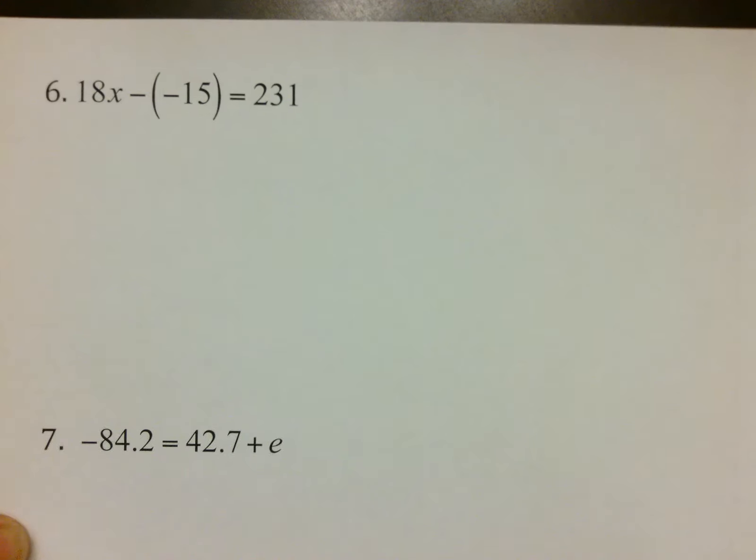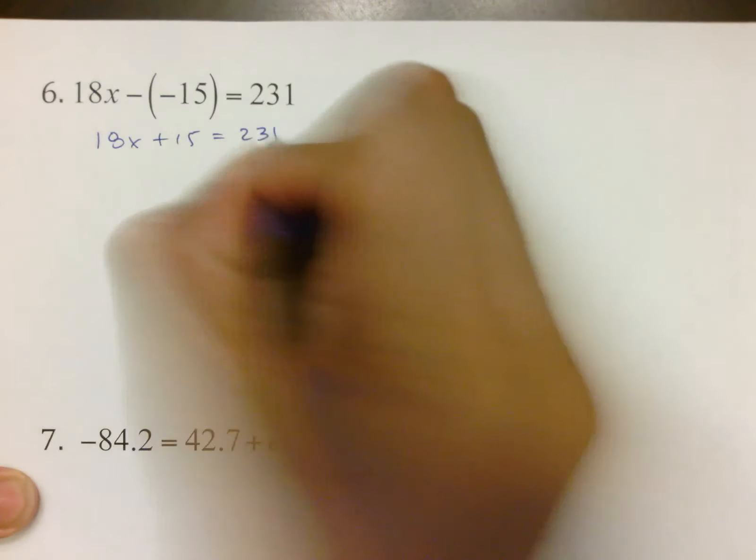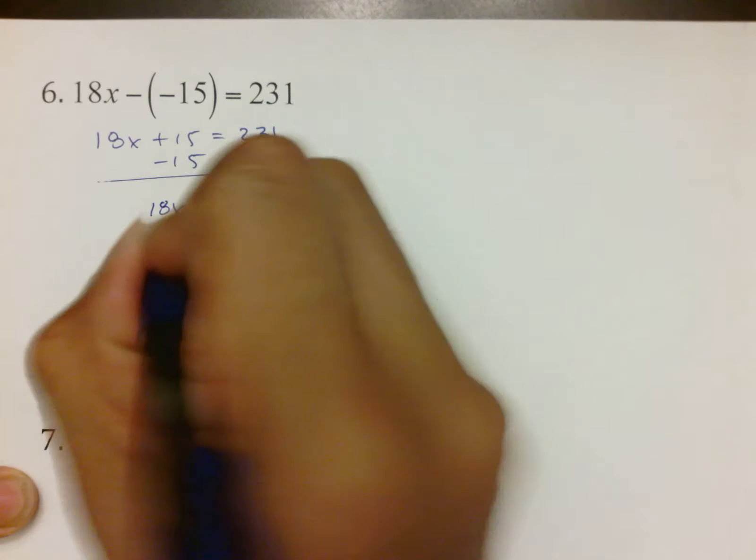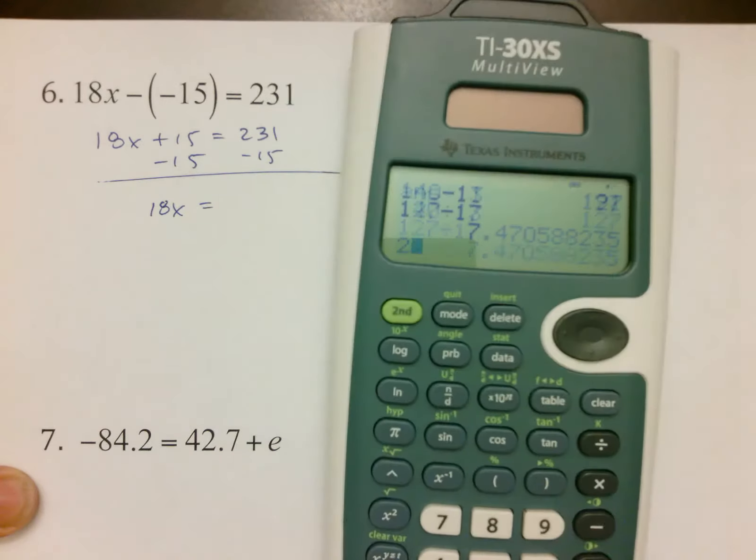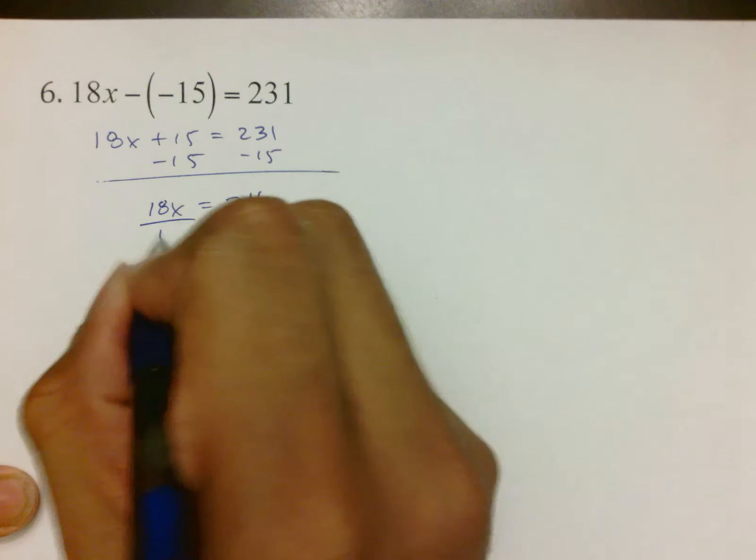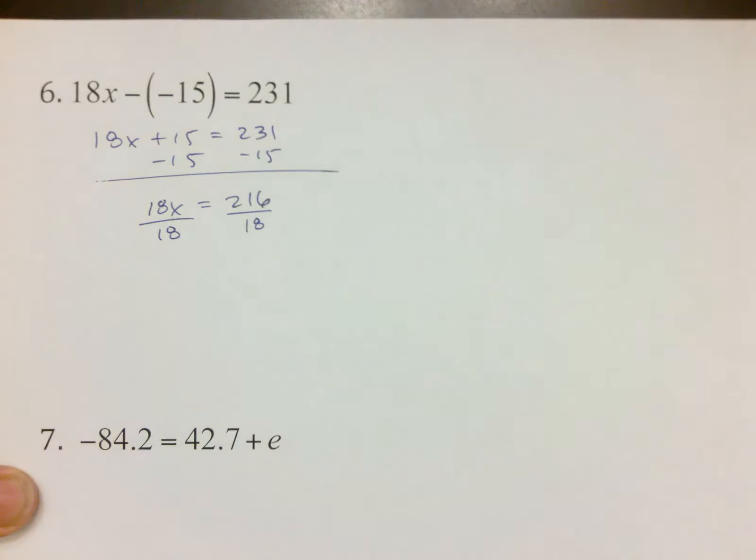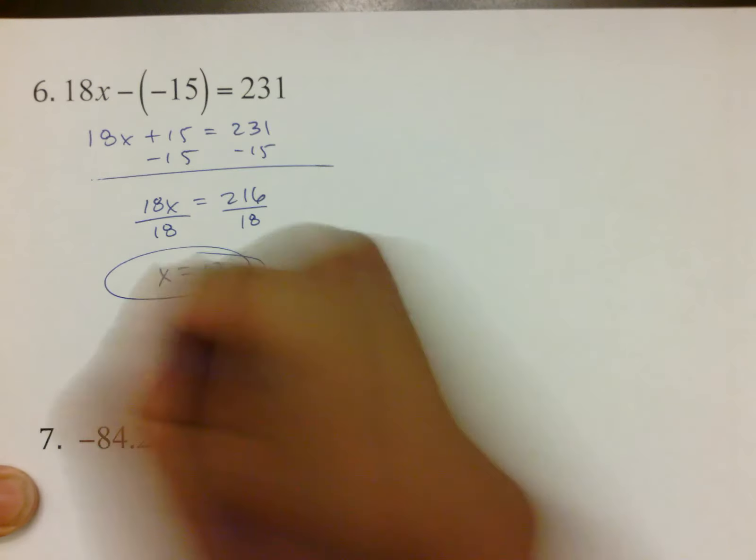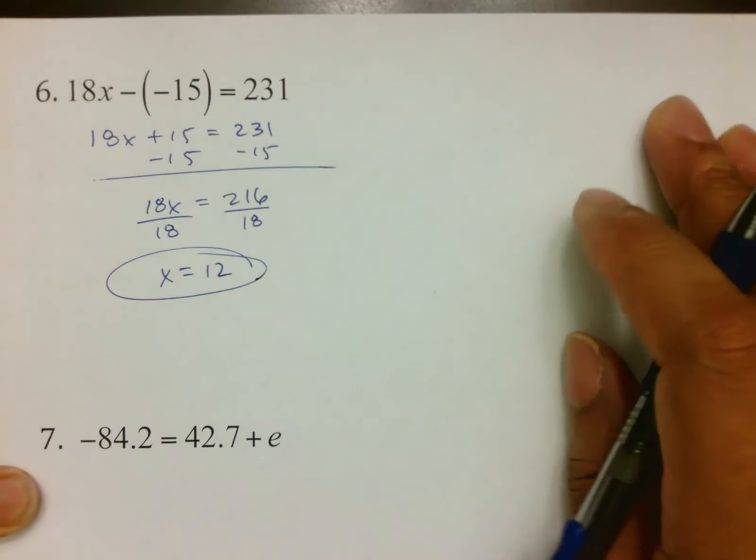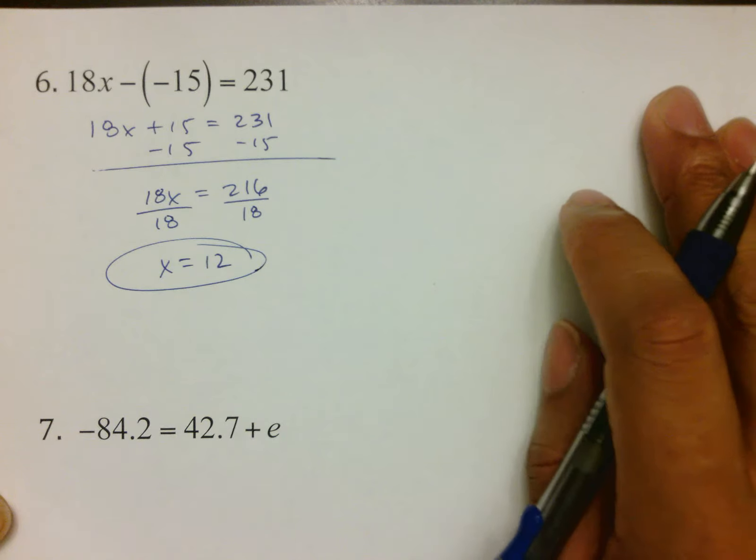Number 6, turn that to plus 15. From there, solve as usual. Subtract 15. You get 18x equals whatever 231 minus 15 is, which is 216. Divide by 18 to get that by itself and we get a nice answer of 12. Just make sure you're copying these things down. It's just a real fast walk through the test to make sure you've at least seen one more time what's going to be on it. That way I know that you've been prepared as much as I can possibly prepare you for it, and everything else is on you from there.